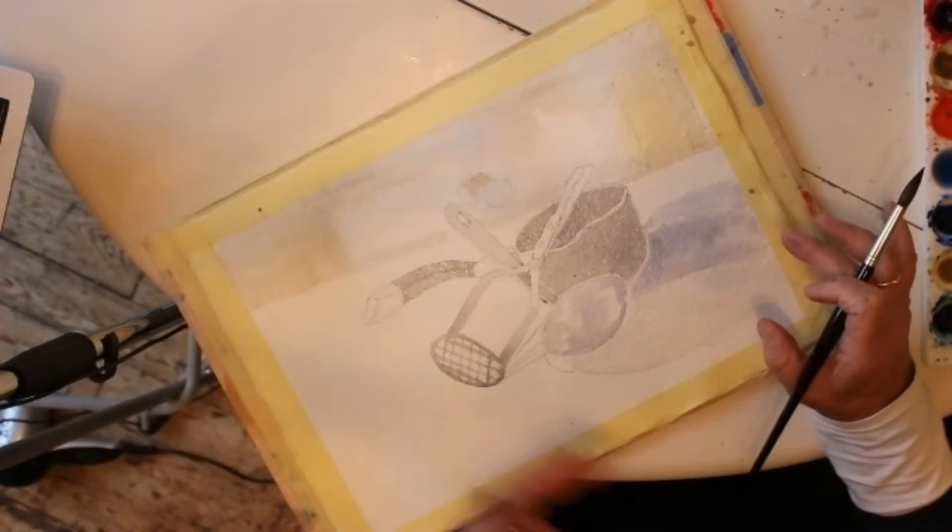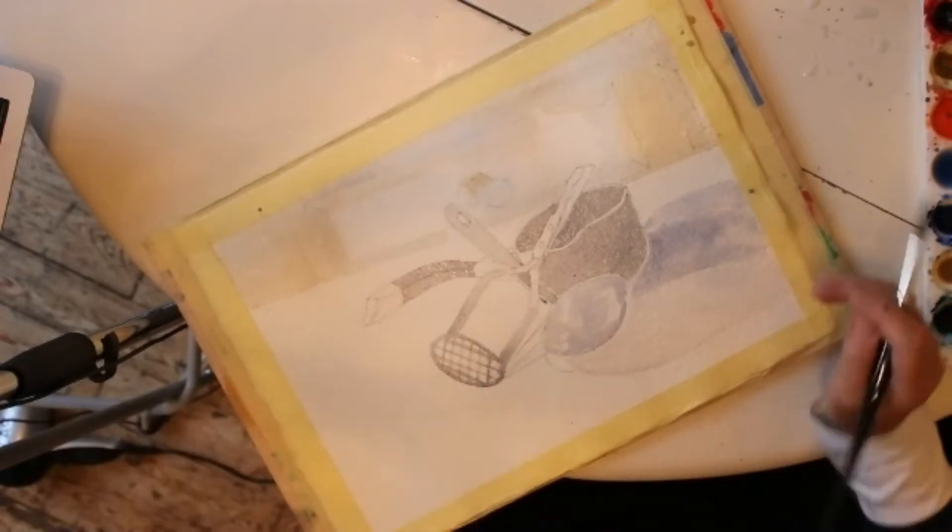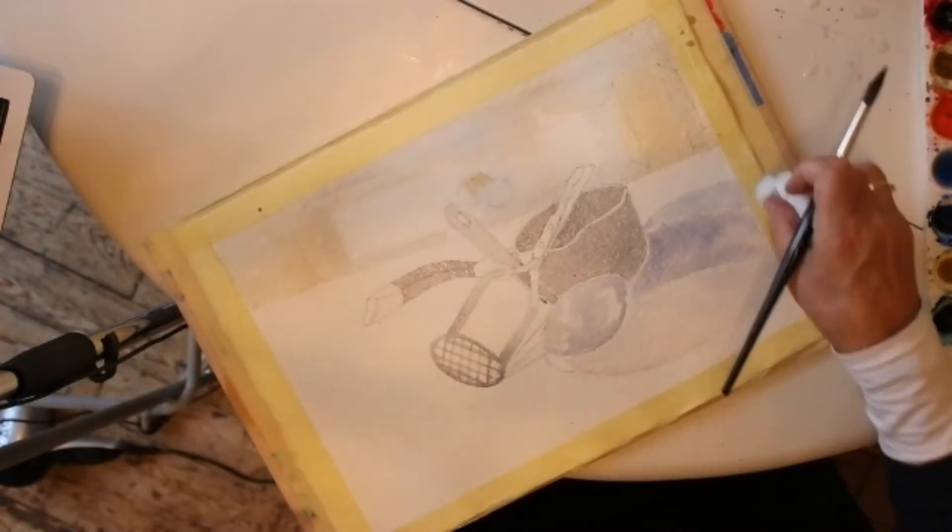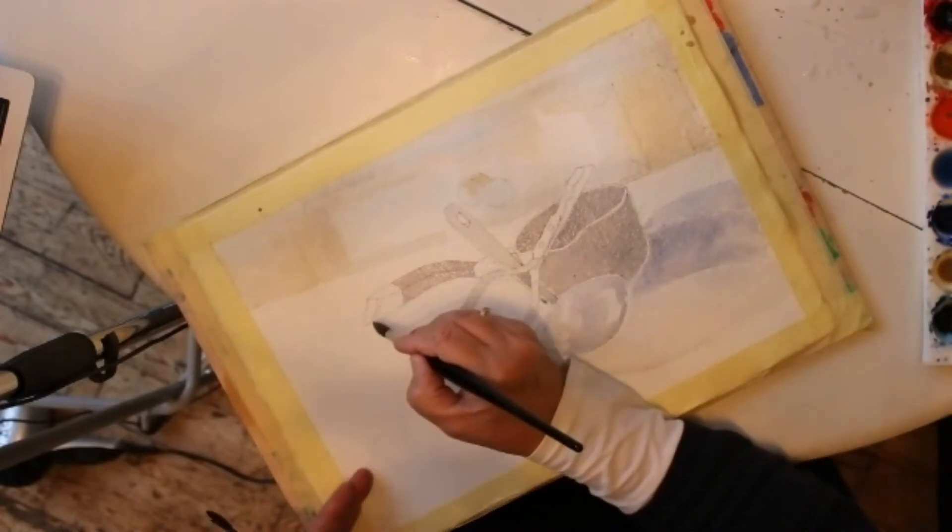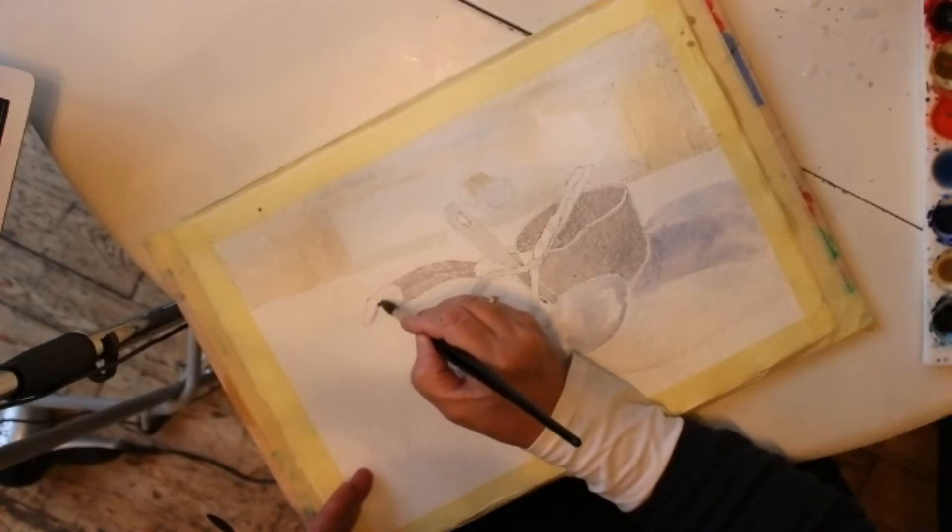These cast shadows are all to the right of the objects because the light is coming in from the left. When somebody looks at that, it's convincing because that has been taken into consideration. If you don't consider the light source, you can end up with something that just looks a bit mechanical and not well considered.